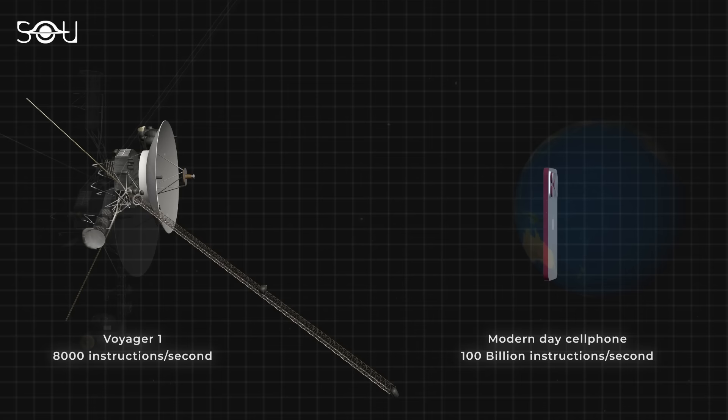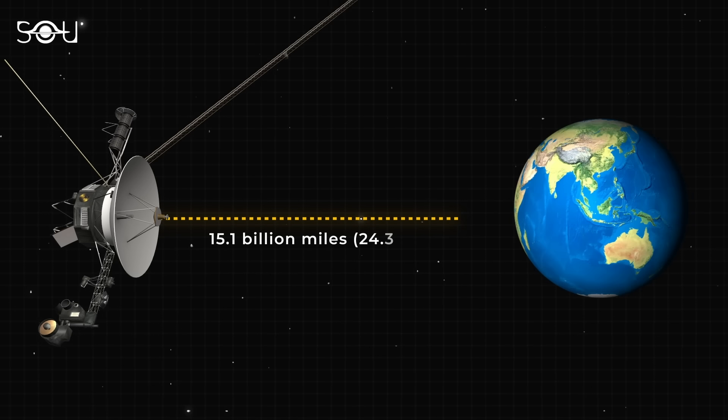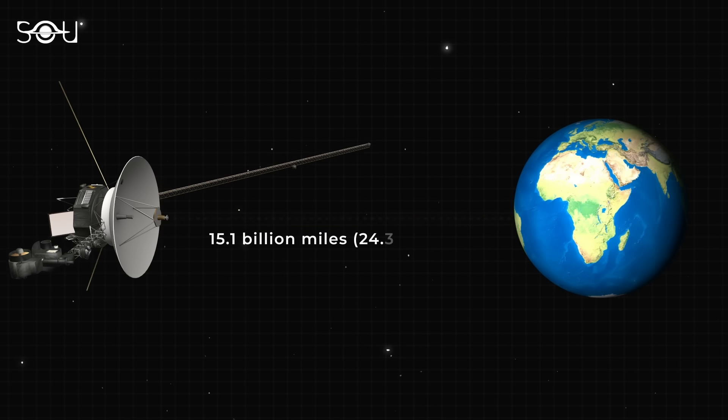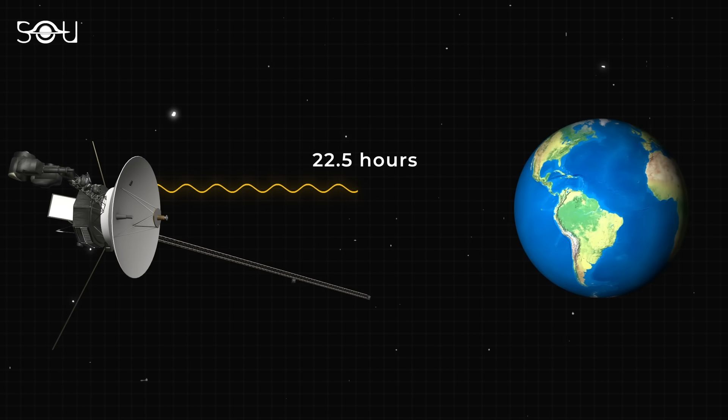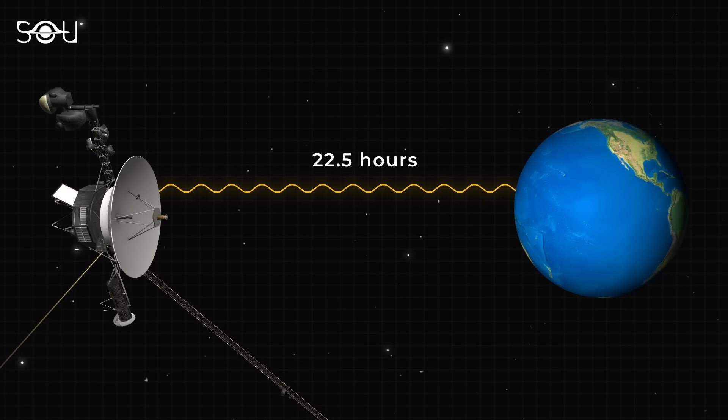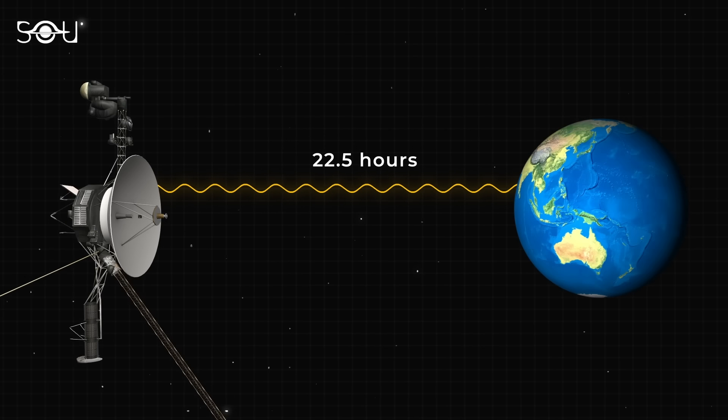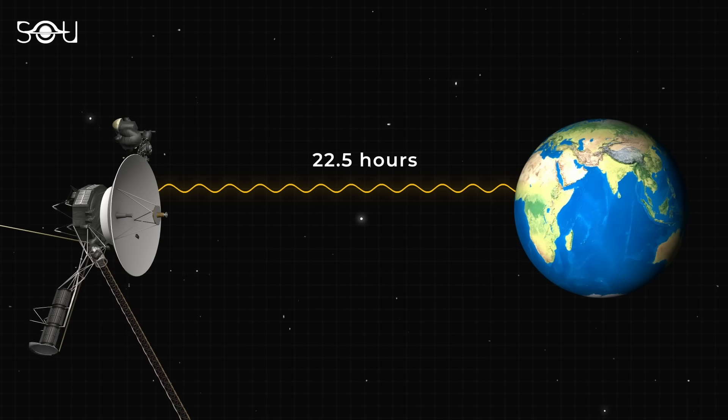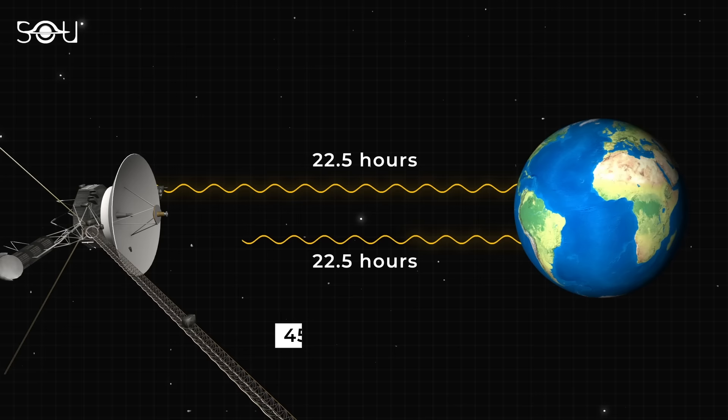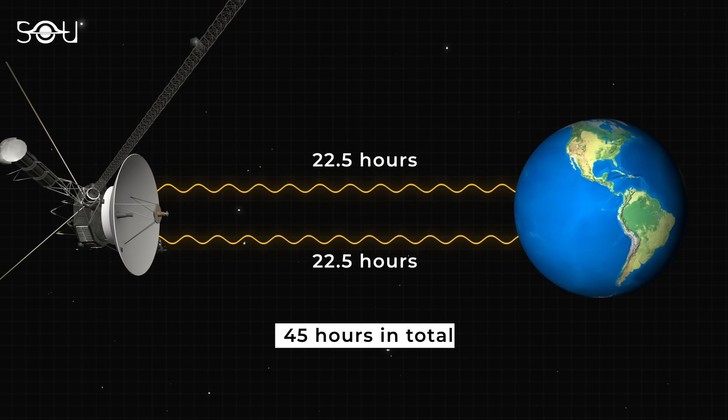Secondly, at the current distance of Voyager 1, it takes almost 22.5 hours for light to travel one way to Earth. So whenever the team comes up with a possible solution and tries something, it's a 45-hour round-trip wait for the signal to get there and a response to return.